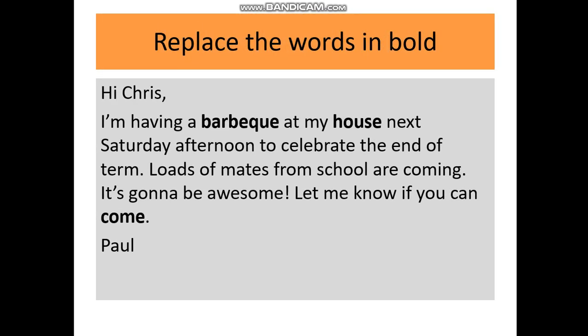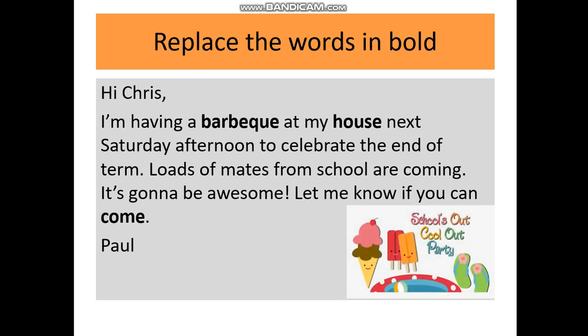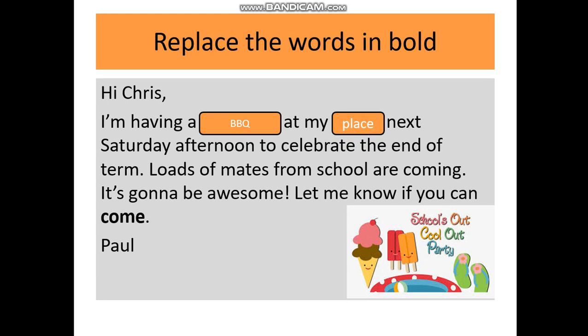Now let's see some more examples of invitations and try to make them more informal by replacing the words in bold. Try to give the answer before it appears on the screen. 'BBQ' we can replace with the letters B, B, Q. 'I'm having a BBQ at my house' — we can replace 'my house' with 'my place.' And 'let me know if you can come' — instead of 'come' we can use 'make it.'